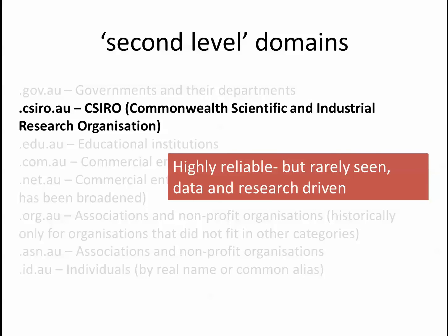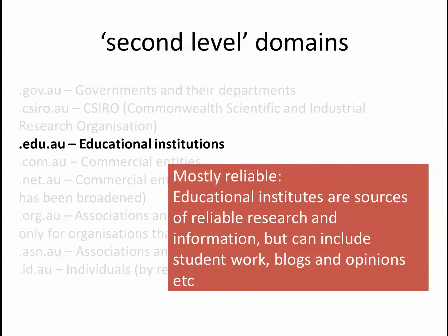CSIRO.au is also very reliable but rarely seen — very research driven and mostly over my head. It won't come into our world much when talking about law. The .edu.au sites are educational institutions — pretty reliable, lots of research, lots of information. But sometimes it can be students' work, blogs, or opinions, so we need to watch that. With .edu.au, you need to be careful — individual schools, colleges and universities have a protocol for third-level domains, like schools.nsw.edu.au.